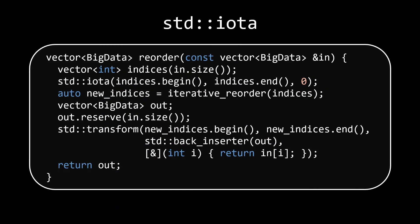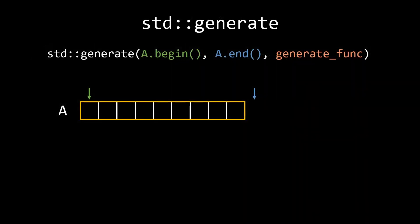The last and most powerful generator is the standard generate algorithm. Just like iota and fill, it operates on an iterator range. But as the third argument, it takes a function which it will invoke to generate each of the elements it writes to the specified range.